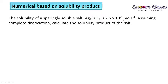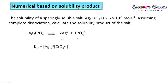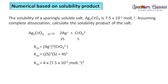The next numerical: the solubility of the sparingly soluble salt silver chromate is given. Assuming complete dissociation, calculate the solubility product. Silver chromate dissociates to give 2Ag⁺ (2s) plus CrO₄²⁻ (1s). Ksp = [Ag⁺]²[CrO₄²⁻]¹ = (2s)² × s = 4s³. By putting the known value of solubility s into this equation, we calculate the Ksp value.